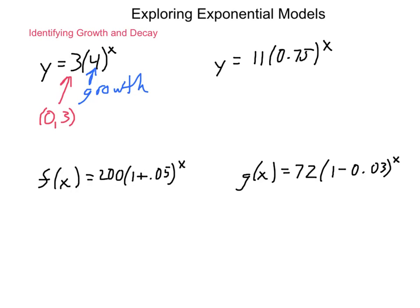Now, next one: y equals 11 times 0.75 to the x. 0.75 is less than 1, but greater than 0, so this shows decay. And what is our starting value? Our starting value comes from our a value. We will have 0, 11. The important thing to remember in working here is that anything raised to the 0 power is 1.